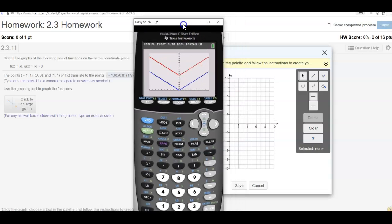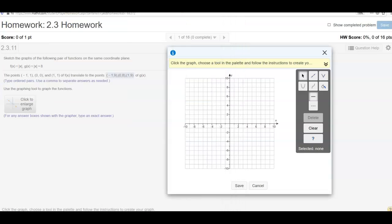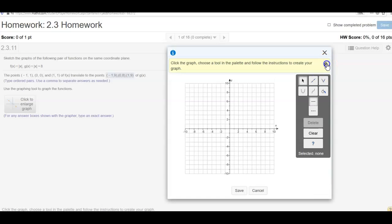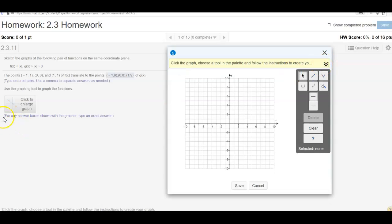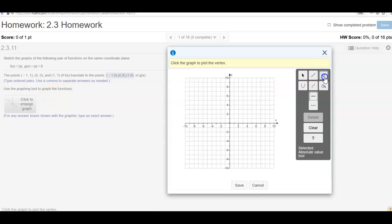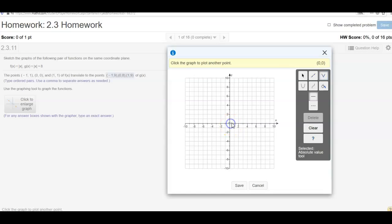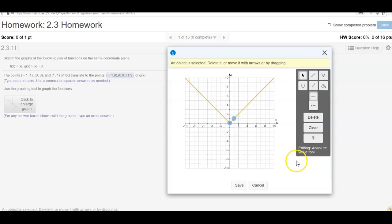All right, so let me go ahead and do this for a second. It says, click the graph in the palette and follow the instructions to create your graph. And they are asking us to graph the functions. All right, so if I use this tool, it looks like I just have to graph two points out like this. So there's my first one.